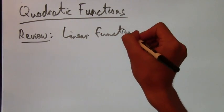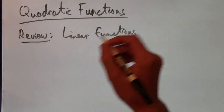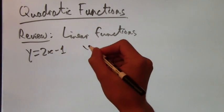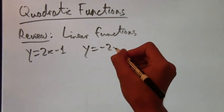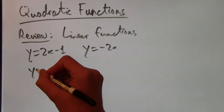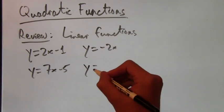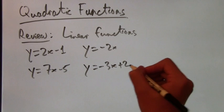Some examples of linear functions could be y equals 2x minus 1, or y equals negative 2x, or y equals 7x minus 5, or y equals negative 3x plus 2.